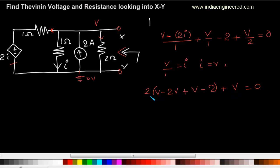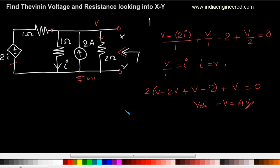So from this we get V equal to 4 volts. This is nothing but the Thevenin voltage. Now we have already found the Thevenin voltage, so next we will find the short-circuit current across terminal XY.